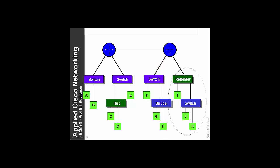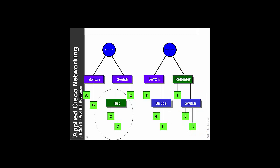The repeater also forwards, so it forwards to the switch which connects to G and K, but is bounded here. So ARP only applies within the broadcast domain. Nodes within that broadcast domain can connect directly to other nodes because they can actually discover them within the broadcast domain.